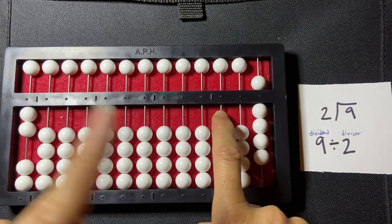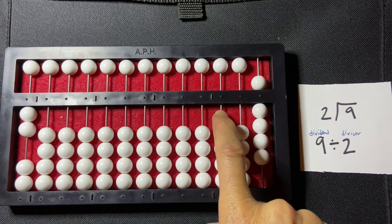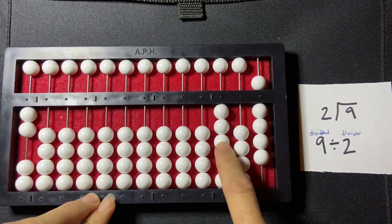So how many times does 2 go into 9? How many groups of 2 go into 9? So I know that that's going to be 4. 1, 2, 3, 4.